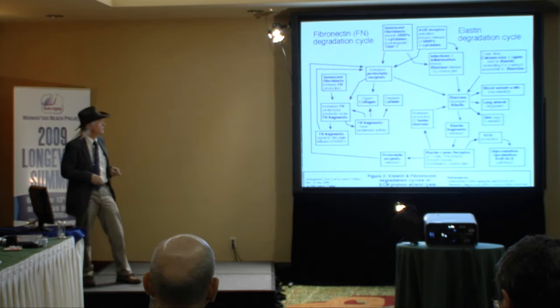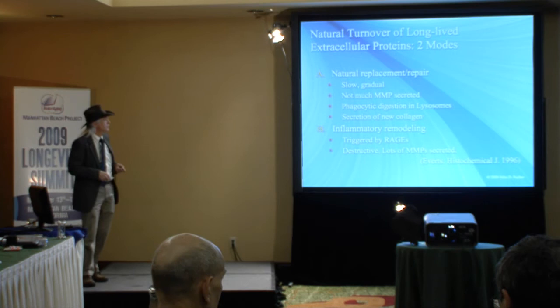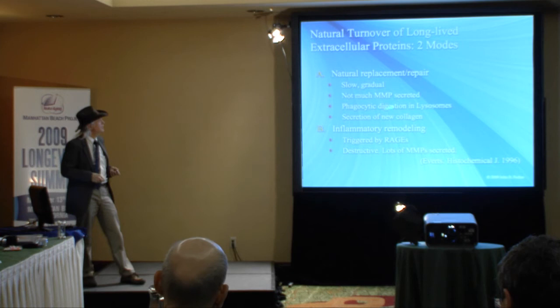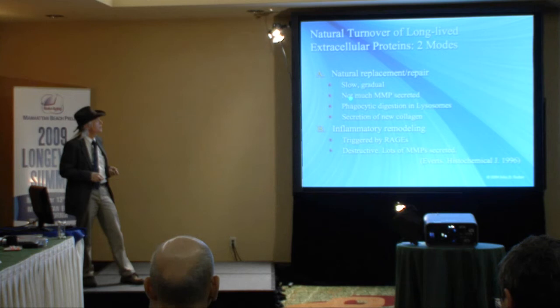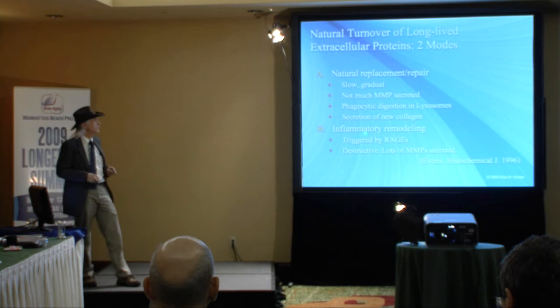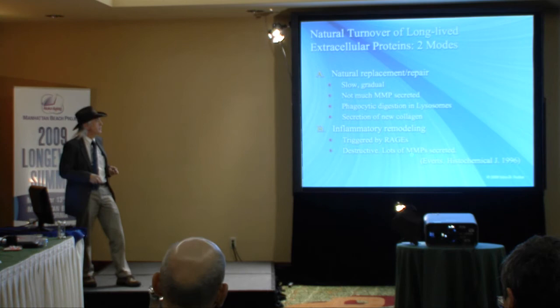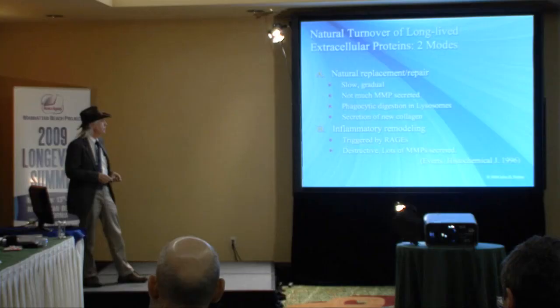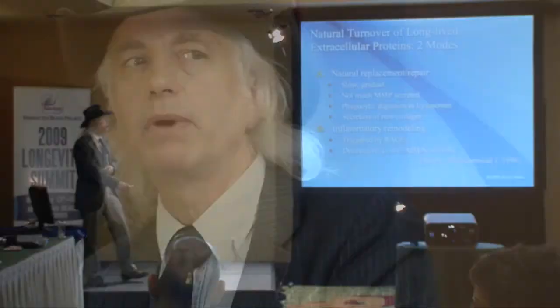Fibroblasts have two ways of tearing down and replacing extracellular matrix. One is natural, slow, gradual, and very nice. The other is fast and damaging — it's called inflammation. Signals called RAGEs cause the release of matrix metalloproteinases (MMPs) that dissolve the extracellular matrix so rapidly that it doesn't get repaired well — you get scar tissue, damage, and arthritis. This inflammatory remodeling likely evolved to open up the extracellular matrix and allow immune cells to get in rapidly during bacterial infections, but it's not good for us in general.